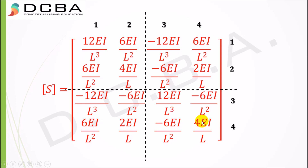There are a few observations to make about this matrix. The diagonal elements S11, S22, S33, and S44 can never be negative — they are always positive because the applied force and the reaction coincide with each other in direction. You can verify this by reviewing the derivation steps.